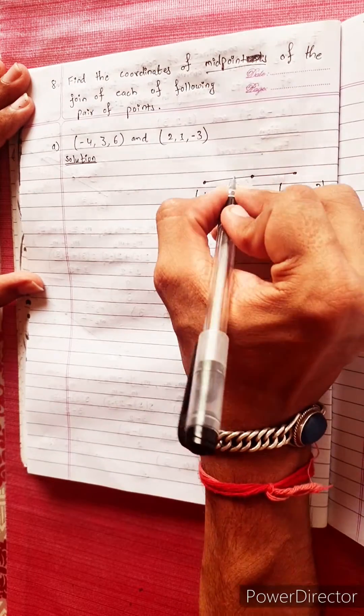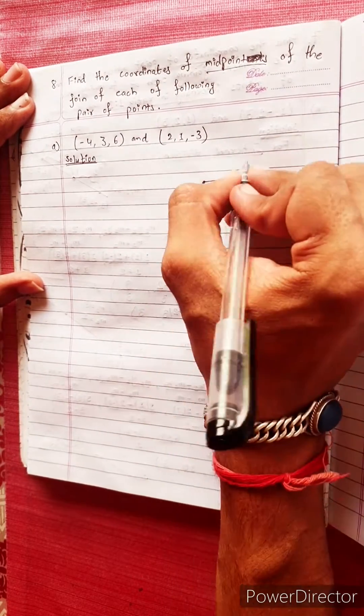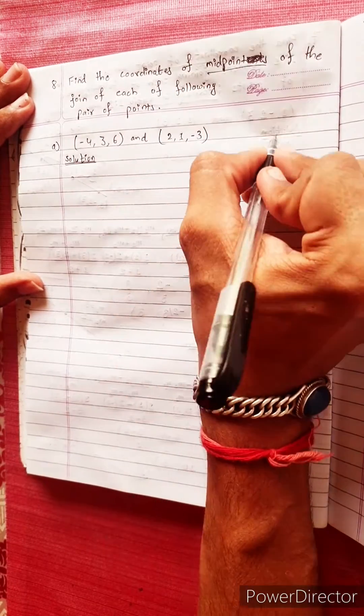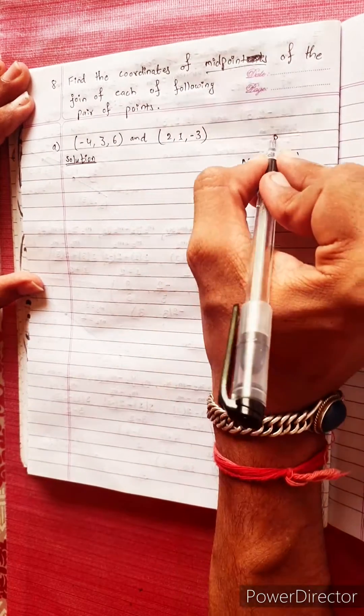This is the midpoint. This means the line equals the midpoint. The point is midpoint. This means, suppose, M(X, Y, Z). This is X, Y, Z. This is the coordinates.